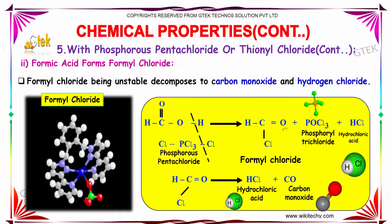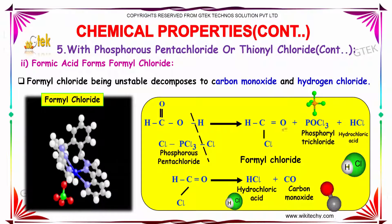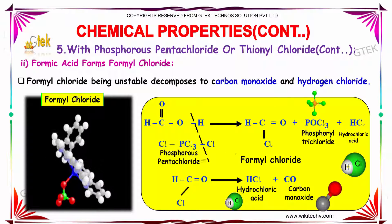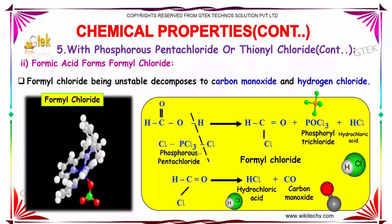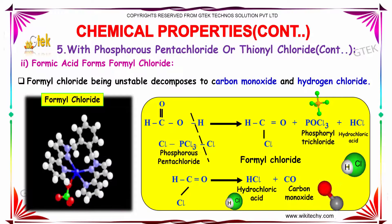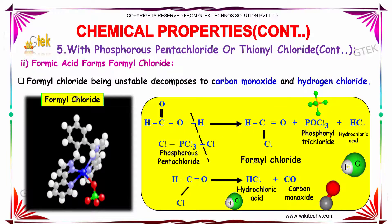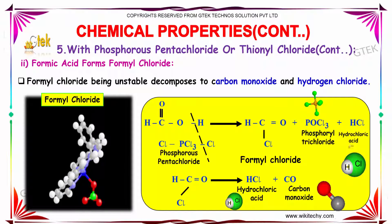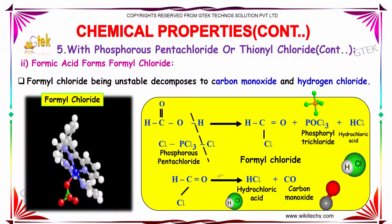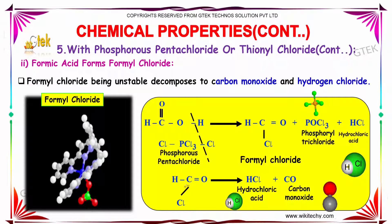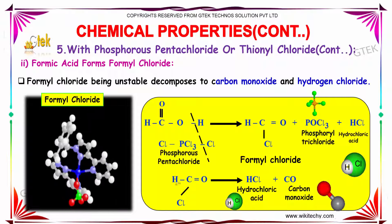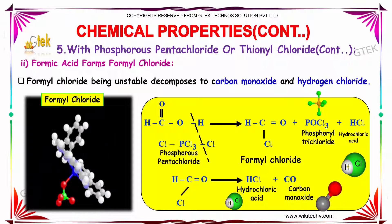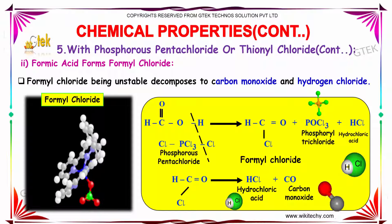Formic chloride, being unstable, decomposes to carbon monoxide and hydrogen chloride. In the following reaction, phosphorus pentachloride reacts in the presence of PCl3 to produce formic chloride, phosphoryl trichloride, and hydrochloric acid. Similarly, this chloro-substituted aldehyde decomposes to give hydrochloric acid and carbon monoxide.